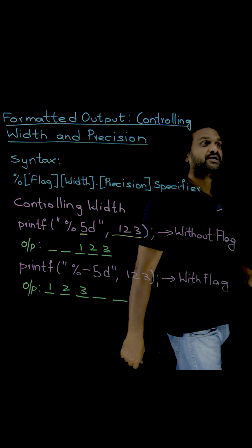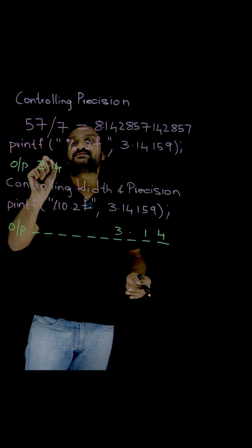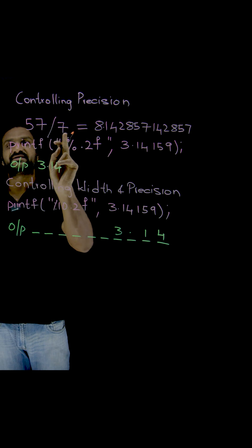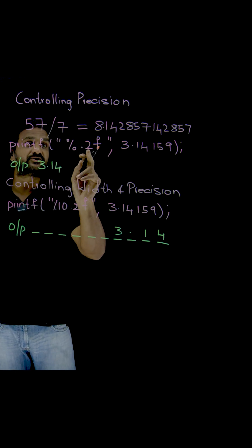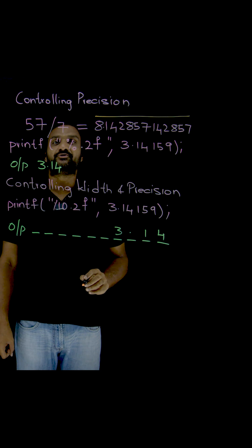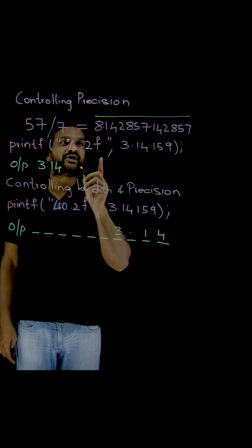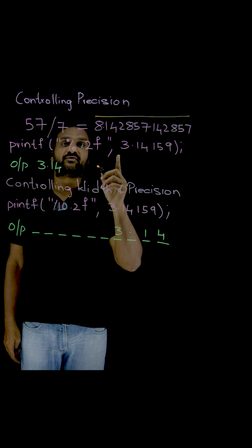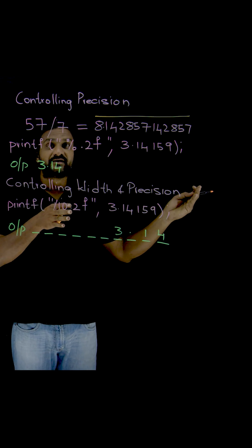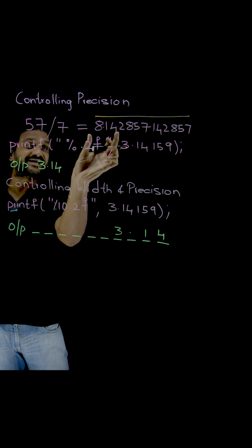Now, how to control the precision? For example, I have taken this example. Let us take 57 by 7. What is it going to be? It is going to print this long output, 8.142857142857. So it is going to be recursive, right? Now, I want to control this size.